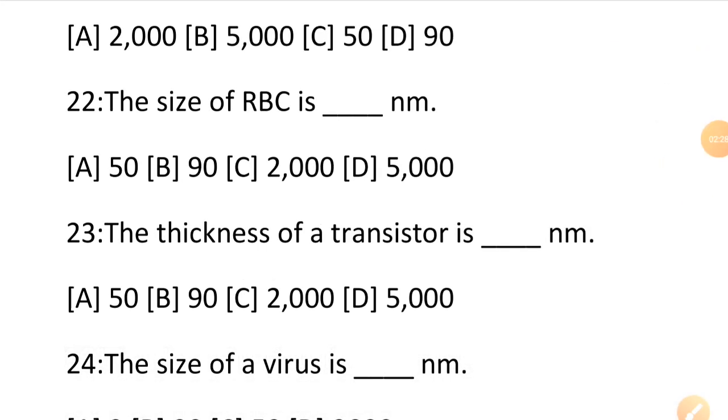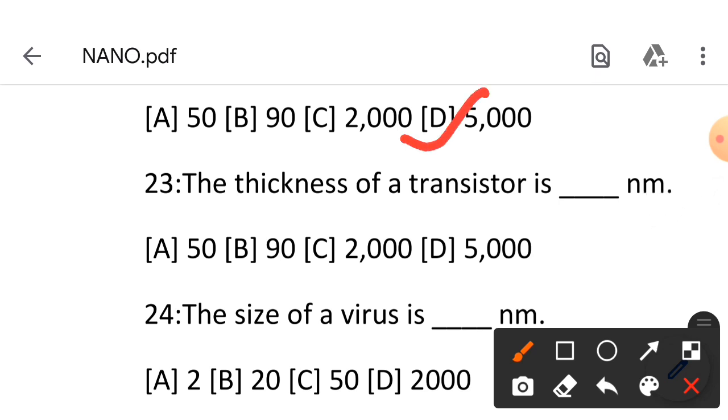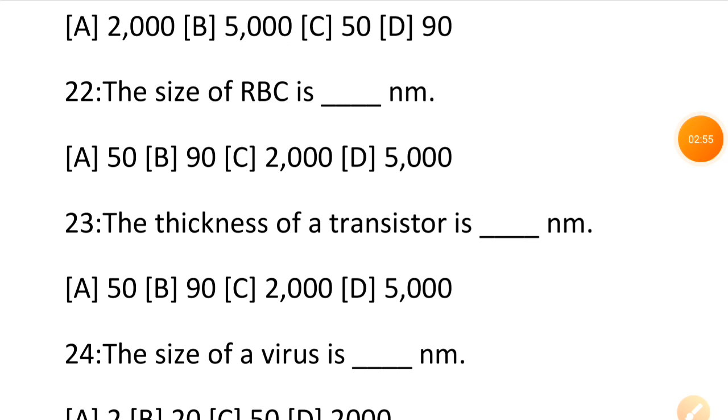Next is the size of RBC, means red blood cells. Red blood cell size normally is 6000 to 8000 nanometer. In this case there is no option, but the nearby answer we can choose is 5000 nanometer.